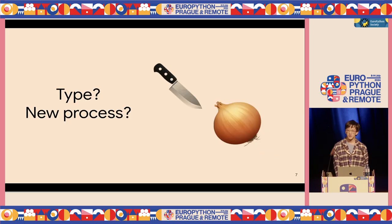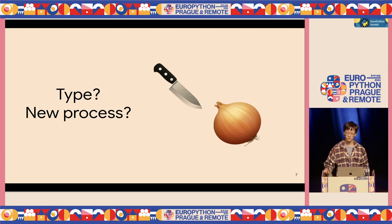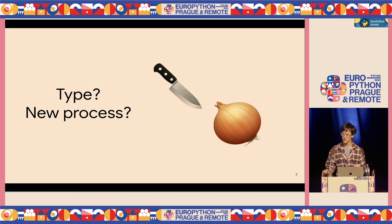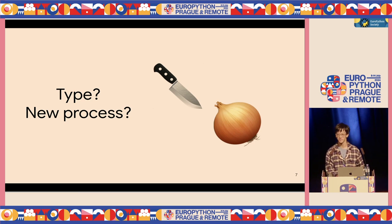So we know the PEP 729 thing. To me it just makes sense when I read the motivation. But what does that mean? What is type? What type do they mean? And why do we need this new process? That's something I want to dive deep into — that's my motivation for this talk.